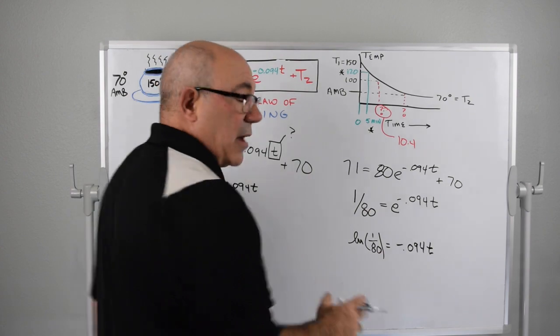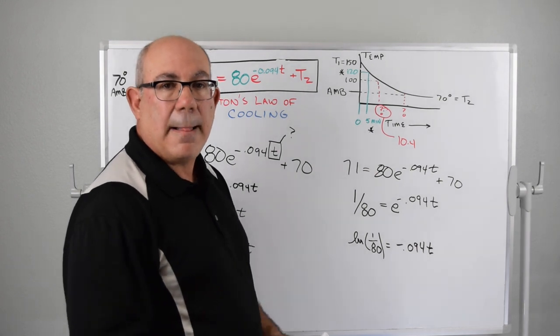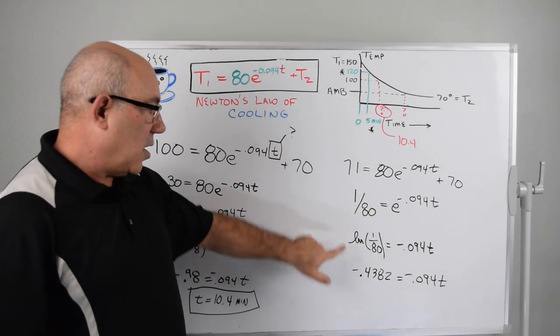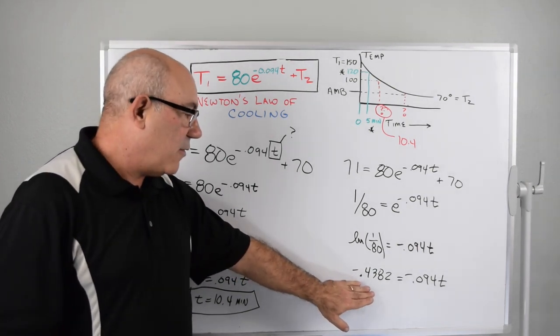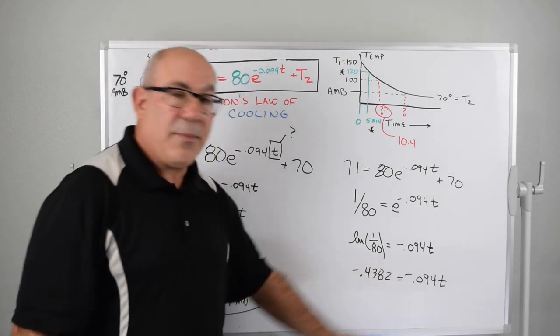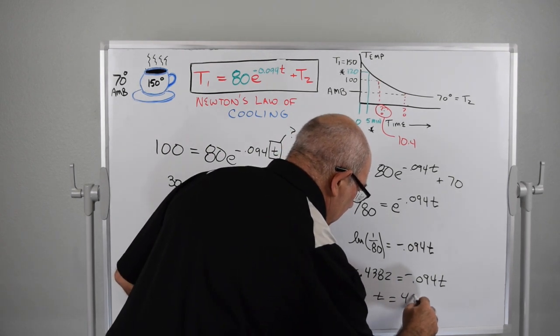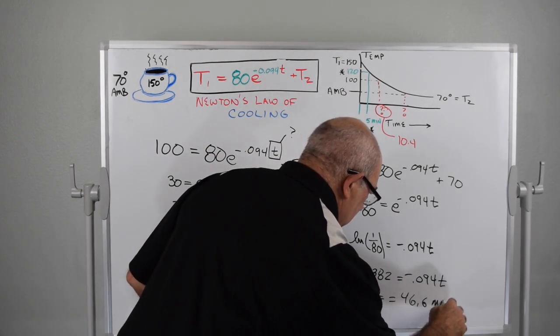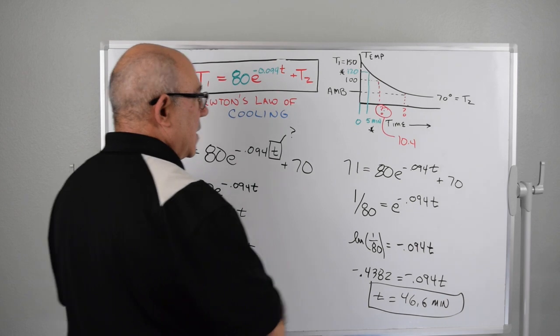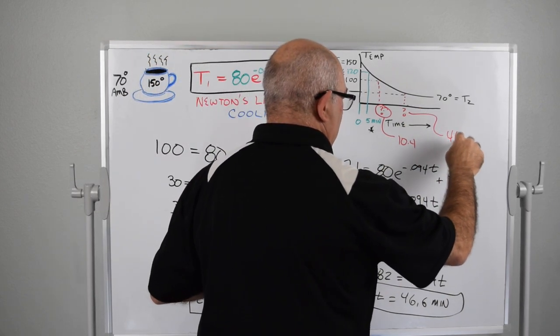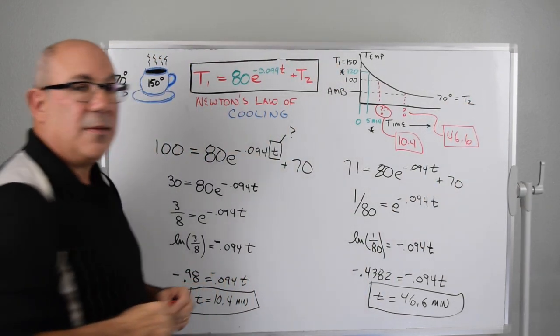I went and calculated the log of 1 over 80, and that turns out to be minus 0.4382. If we divide that by our constant 0.094, we get the time equals 46.6 minutes. That's our answer for how long it'll be approximately the same temperature as the room.